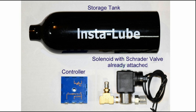The Instalube system came very soon after ordering, and these are the main components I found in the box. First of all, the storage tank, the solenoid with a Schrader valve already attached, and an electrical controller, and we'll talk about all of those in more detail later.